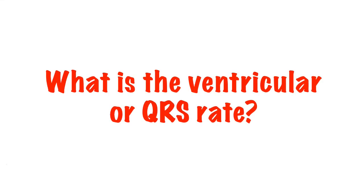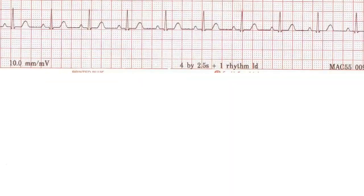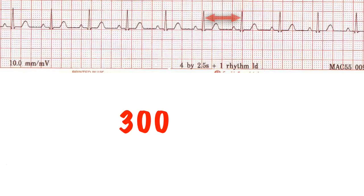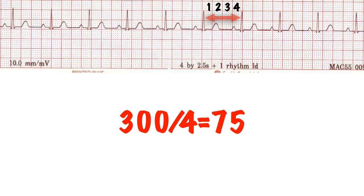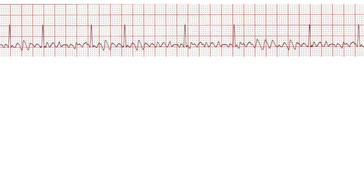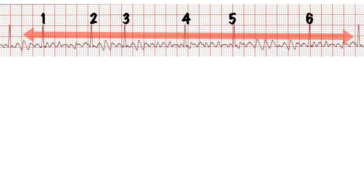There are several ways of calculating heart rate. My personal way, assuming that the ECG doesn't tell you, is to divide 300 by the number of large squares between two adjacent R waves. Or, if the rhythm appears irregular, count the number of R waves that occur between 30 large squares and multiply by 10.